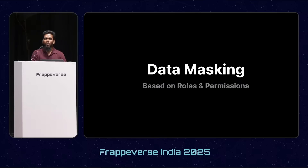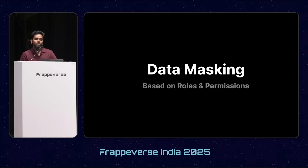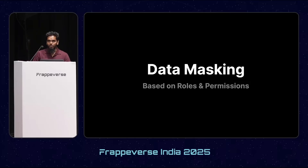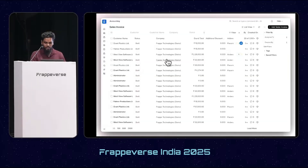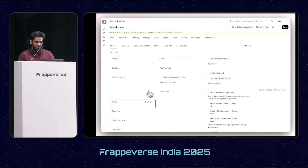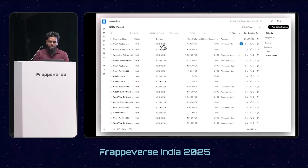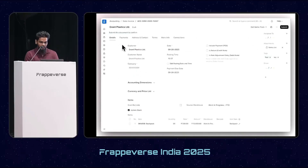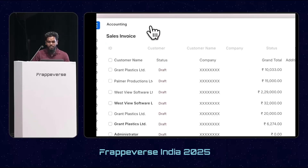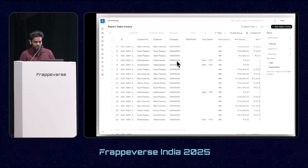We have an option in the Frappe framework to hide fields based on roles and permissions, but we don't have an option to hide data while still showing the field — or we can say, mask data but show the field. Data masking based on roles and permissions will come in version 16. With this, you can hide important data based on roles and permissions, the same way roles and permissions work, while the fields remain visible. Here is a quick demo. As you can see, company is visible. I'll go to the company via Customize Form or doc type, click on mask, click save, then reload. As you can see, I don't have permission for company to view the data — it is now masked in list view, form view, reports, everywhere. That's it. Thank you.